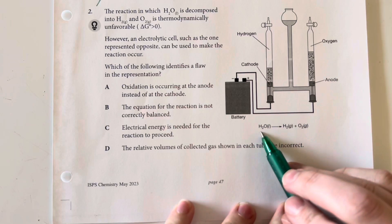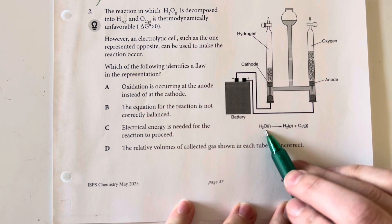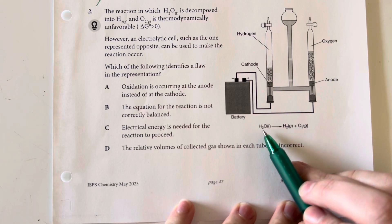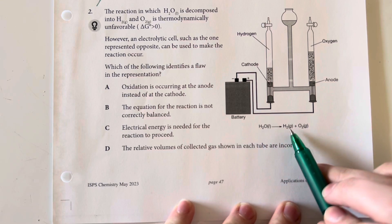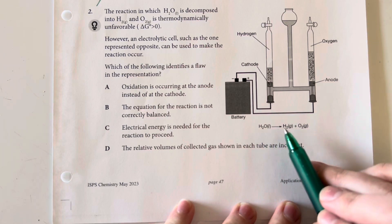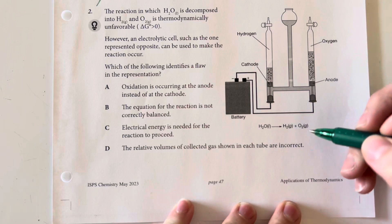So here we have an equation, and that equation is unbalanced. We have one water going to one hydrogen and one oxygen, and that is just not happening here.